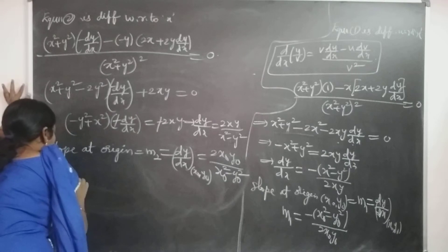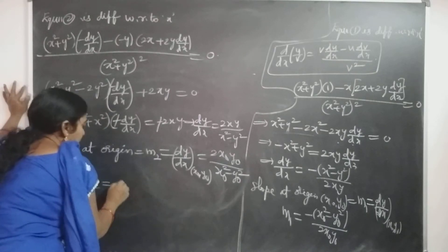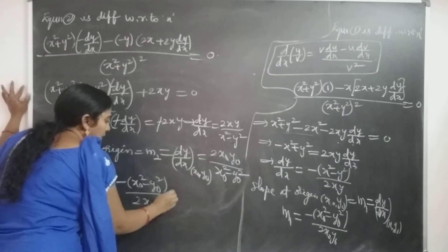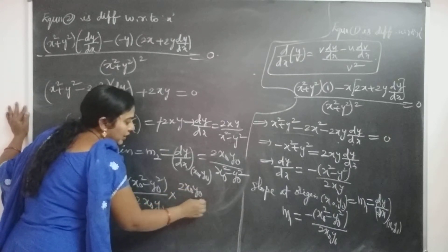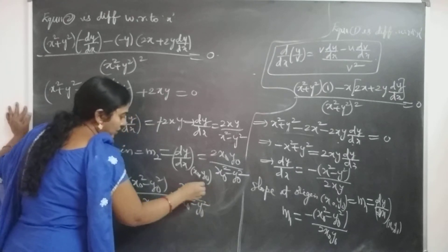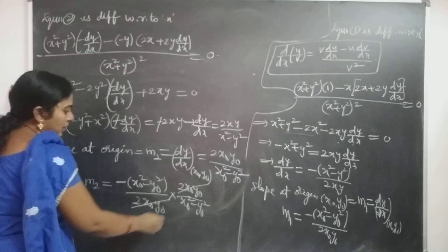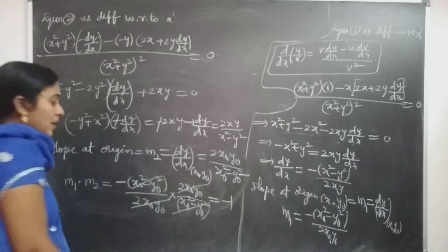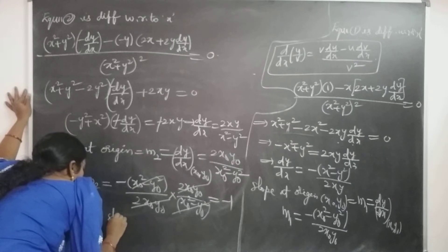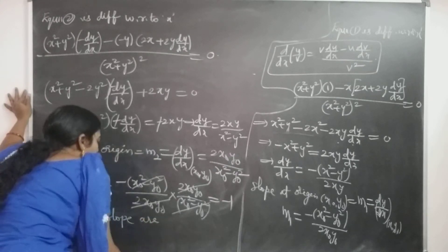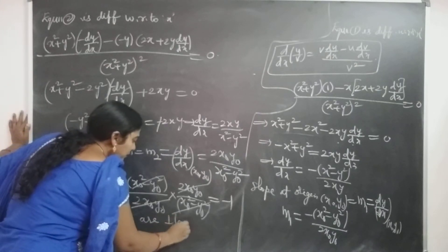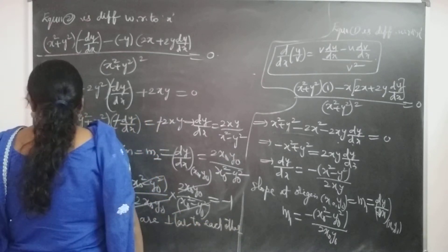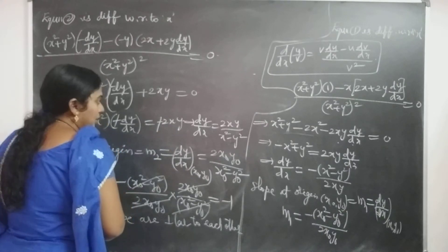Now the product m1 times m2 equals [−(x₀²−y₀²)/(2x₀y₀)] times [2x₀y₀/(x₀²−y₀²)]. The terms 2x₀y₀ and (x₀²−y₀²) cancel, giving the product equal to minus one. Therefore the slopes are perpendicular to each other, so the tangents of the two families are perpendicular to each other.